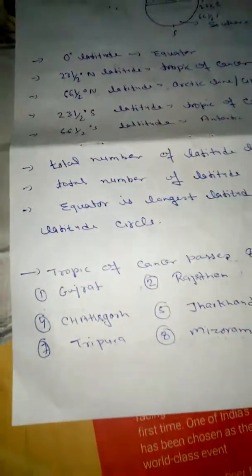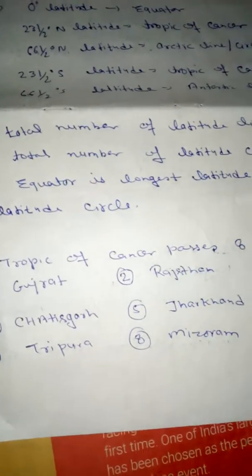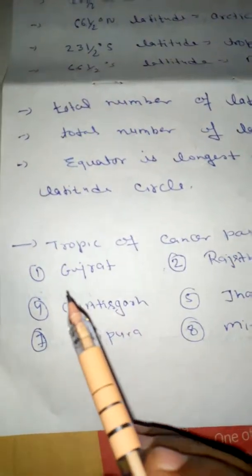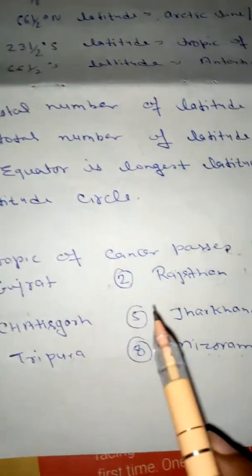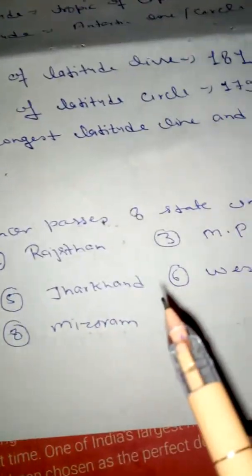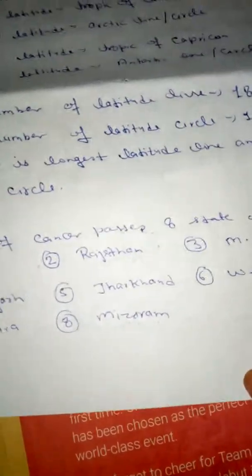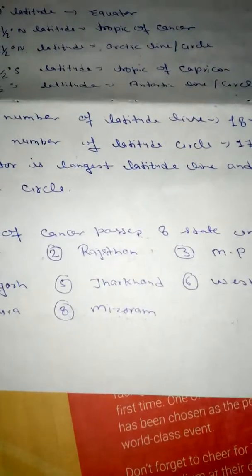Now the question, how many states of India the Tropic of Cancer passes? The answer is eight states which are Gujarat, then Rajasthan, then Madhya Pradesh, then Chhattisgarh, Jharkhand, West Bengal, Tripura, and Mizoram. These are enough for your examination point.